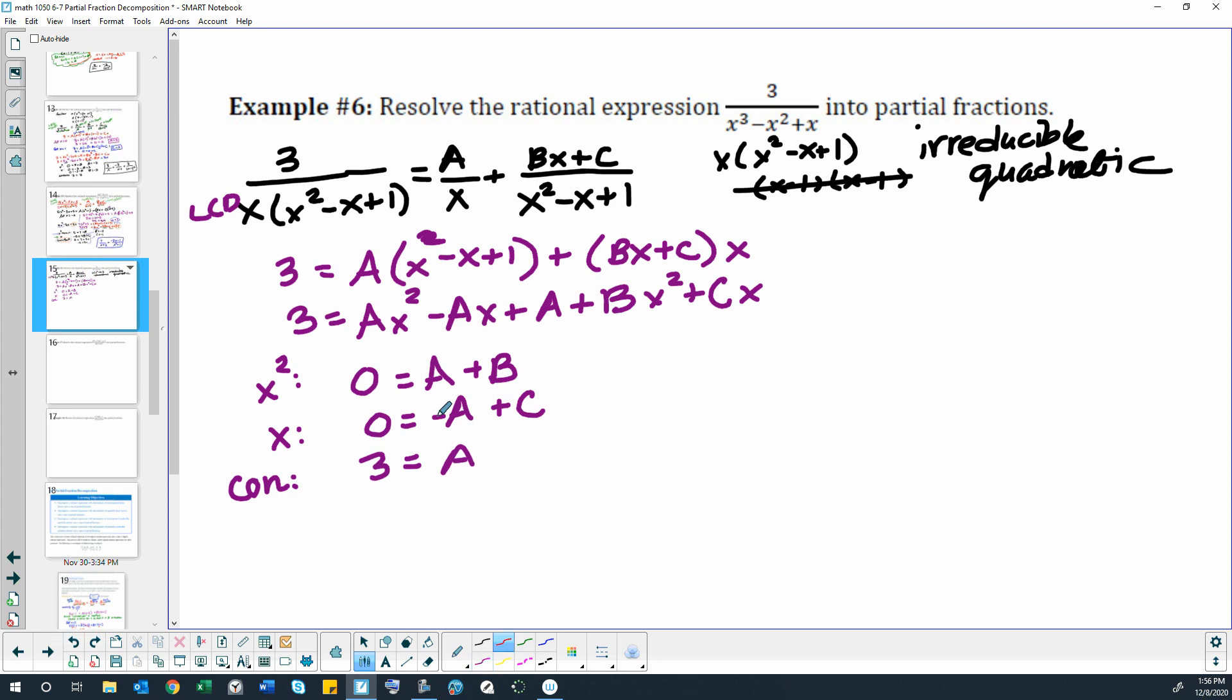So then we would solve this system by substitution, just plug the a in here and here. So this would give us 0 equals 3 plus b, so b is negative 3, and 0 equals negative 3 plus c, so c would equal positive 3.